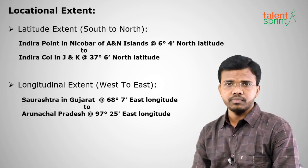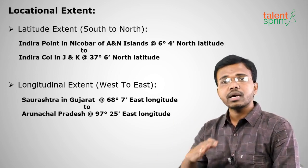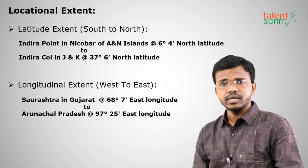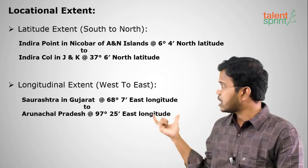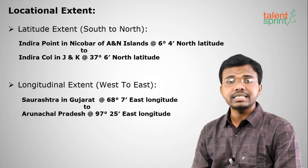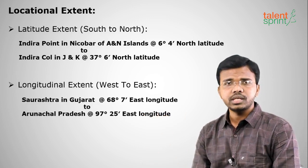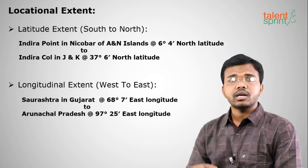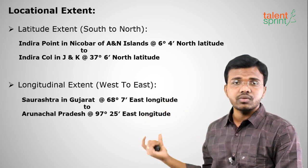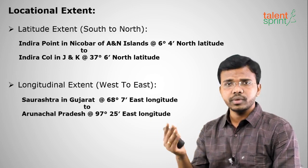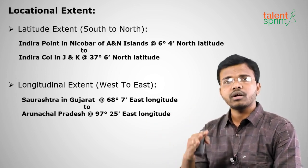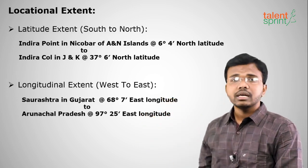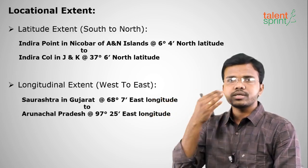For longitudinal extent, India lies entirely on the eastern side of GMT (Greenwich Mean Time). The westernmost point is in Saurashtra, Gujarat, at 68°7' E longitude. The easternmost point is in Arunachal Pradesh at 97°25' E longitude. So for latitudes we are on the northern side, and for longitudes we are entirely on the eastern side.